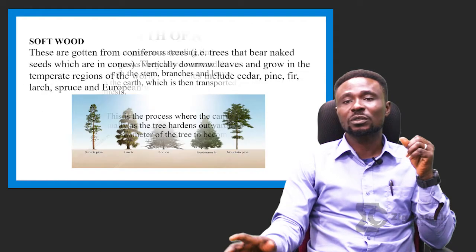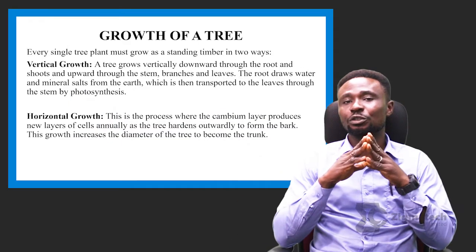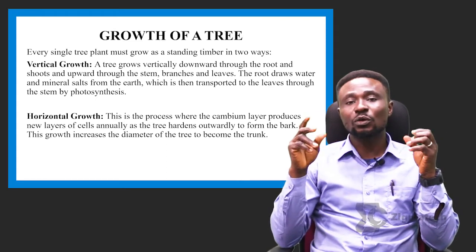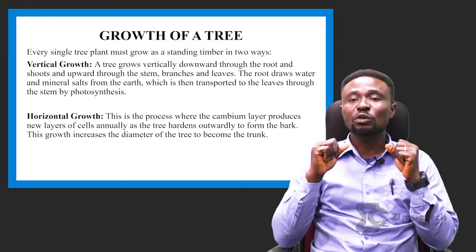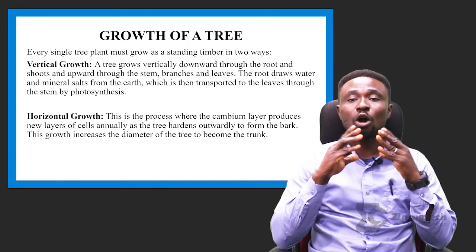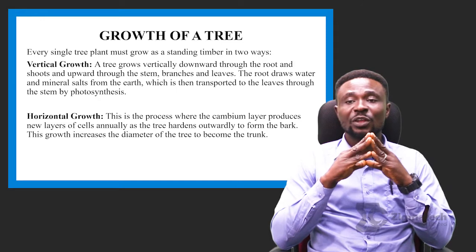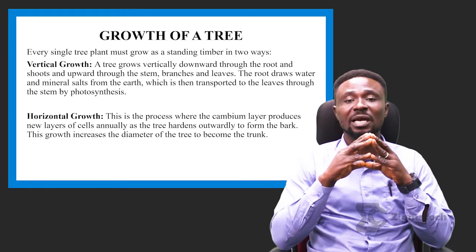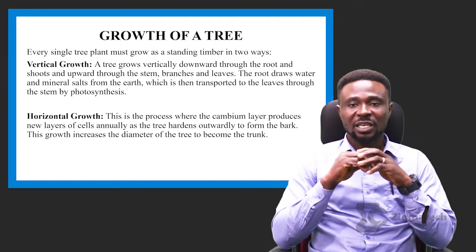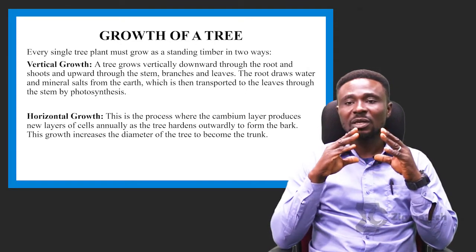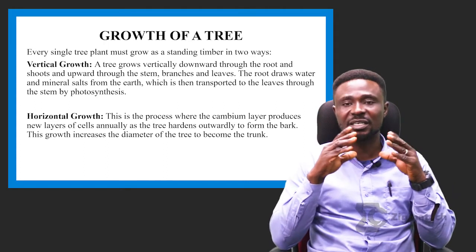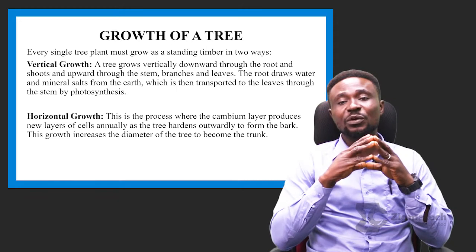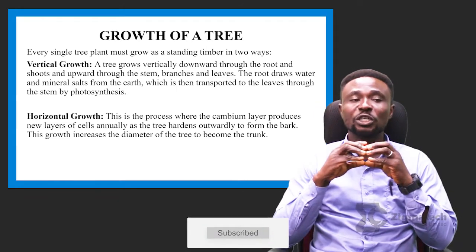Now we talk about the growth of a tree. Every single tree must grow as standing timber in two ways: vertical growth and horizontal growth. Vertical growth — a tree grows vertically downward through the roots and shoot, and upward through the stem, branches, and leaves. The roots draw water and mineral salts from the soil, which are then transported to the leaves through the stem by photosynthesis. Exontal growth is the process where the cambium layer produces new layers of wood annually, as the tree hardens outward to form a bark. This growth increases the diameter of the tree to become the trunk, which we use for timber.